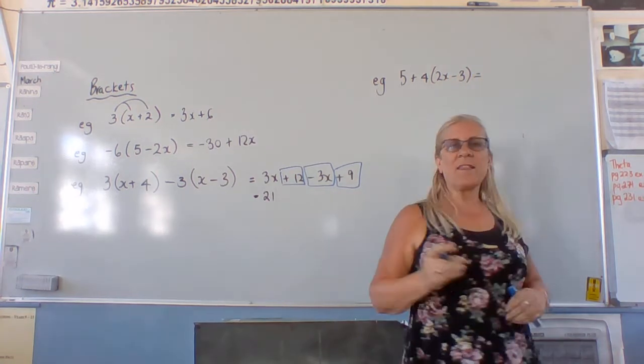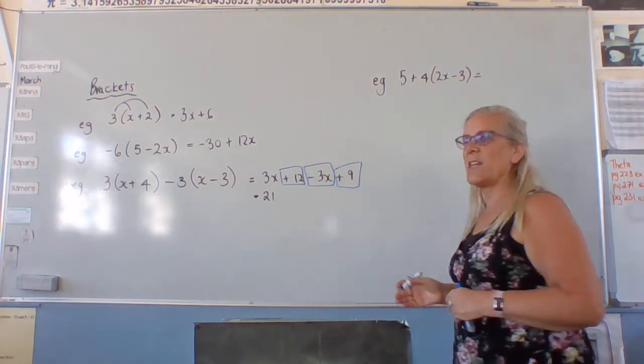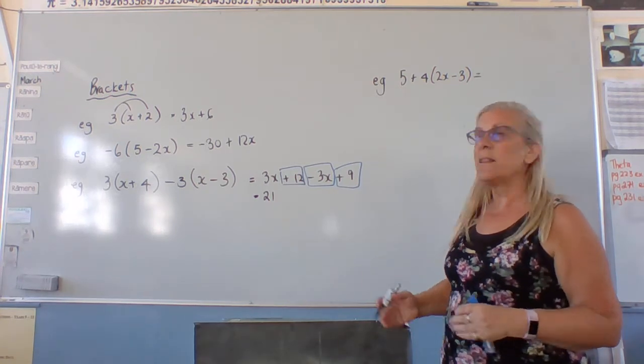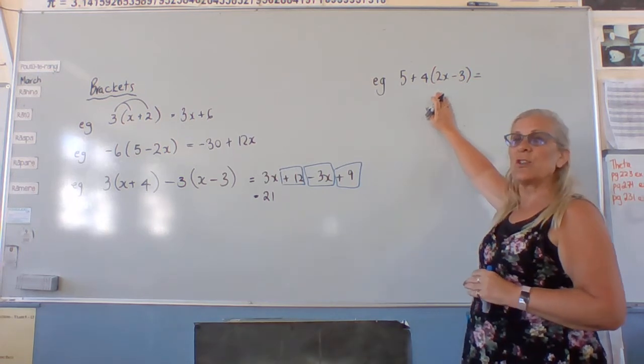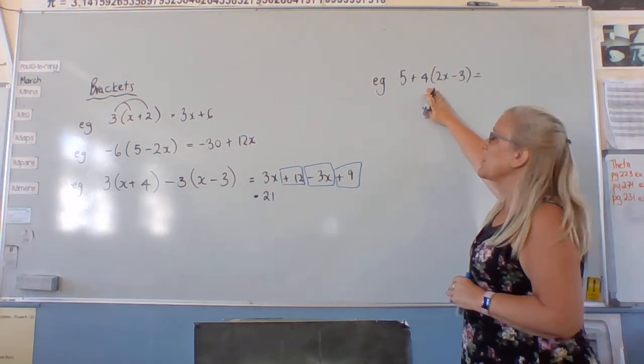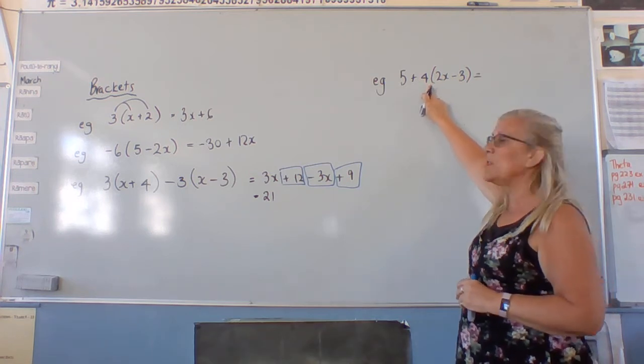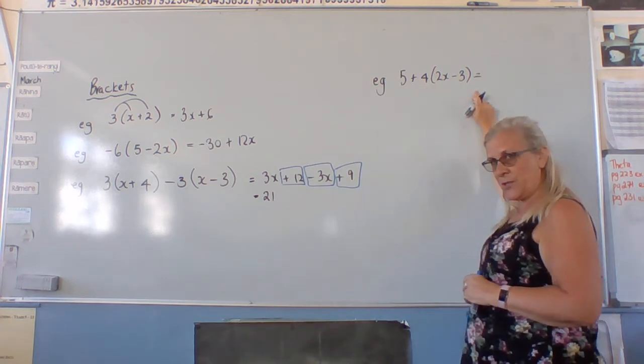Because it looks like the easiest thing to do here would be just to add the five and the four first. But our BEDMAS rules say that we actually need to do the multiplication, which is the brackets in this case. So, there's a multiply sign in here. We're doing four times this first.